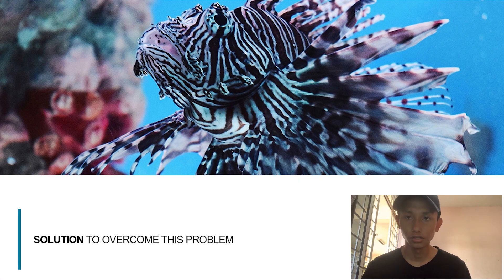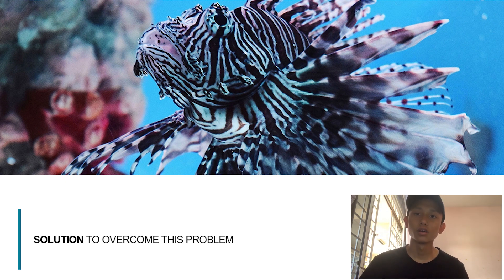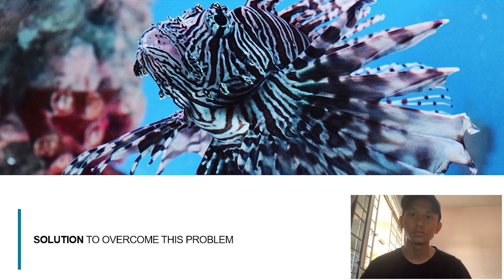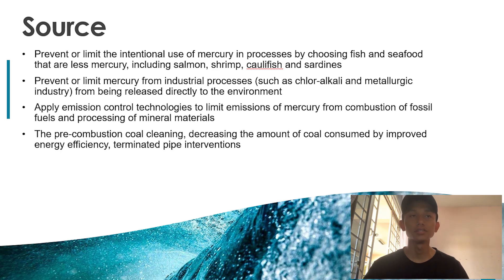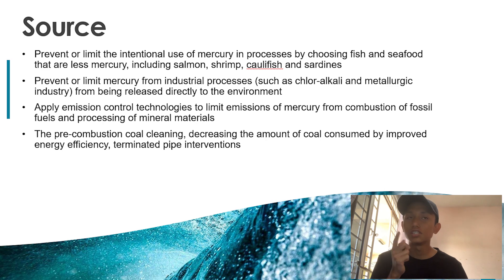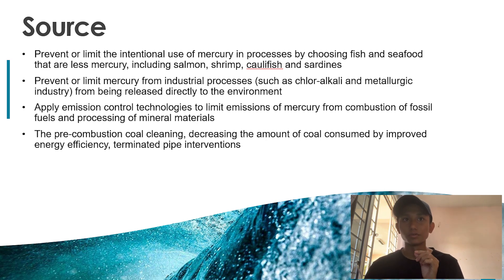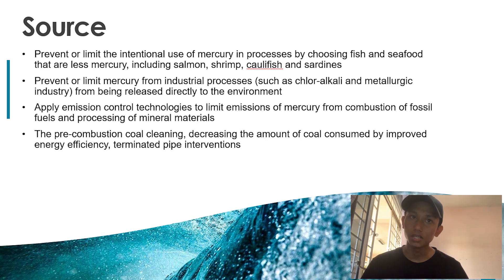My name is Noor Amsham bin Azman from RIS 2503B. Today I want to talk about solutions to overcome mercury pollution. The first sector is source. The first thing we have to do is to prevent or limit the intentional use of mercury in processes by choosing fish and seafood that are lower in mercury.